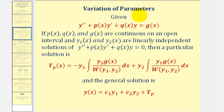The variation of parameters method states that if we're given a differential equation in this form, where p, q, and g are continuous on an open interval, and y₁ and y₂ are linearly independent solutions to equation two — the homogeneous differential equation — then a particular solution to the non-homogeneous differential equation is given by y_p with this formula. Therefore, the general solution to the non-homogeneous differential equation is y of x.